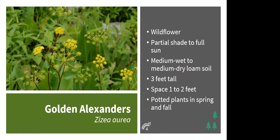Golden alexanders does well in full sun but can also tolerate partial or light shade. It's a great plant to transition from spring ephemerals into summer flowering plants, blooming for about three weeks from May into June. It's not the longest-lived perennial but should reseed itself. It tolerates dry or wet medium soils — a bit wetter or drier than average. Best planted as a plug or potted plant in spring or fall. It grows about 3 feet tall, supports 4 caterpillar species including the black swallowtail, and is visited by bees, wasps, flies, and beetles.